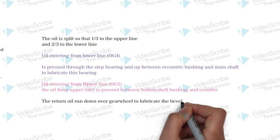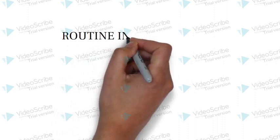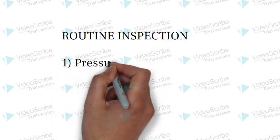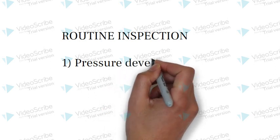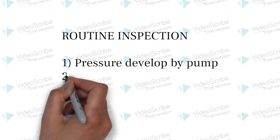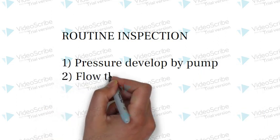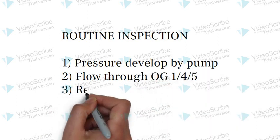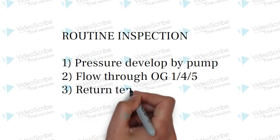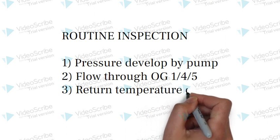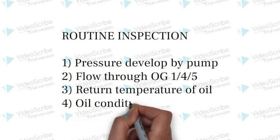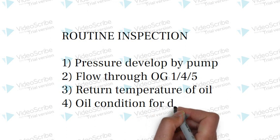To maintain the system's efficiency and prevent any potential issues, routine inspections are crucial. These inspections should include the following checks. The pressure developed by the pump should be above 5 bar for the hydrocone crusher. If the pressure falls below this threshold, it may indicate a problem with the pump that needs attention. It's also important to monitor the flow of oil through AUG-4 and AUG-5. If there is lower flow in either line, it can be regulated using the distribution valve. However, if the flow cannot be properly regulated even after adjusting the valve, it suggests an issue with the heat exchanger.